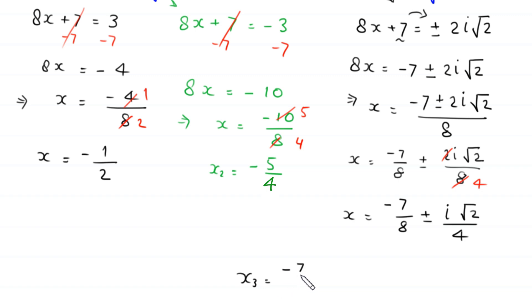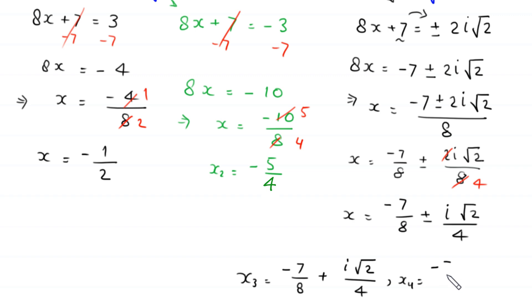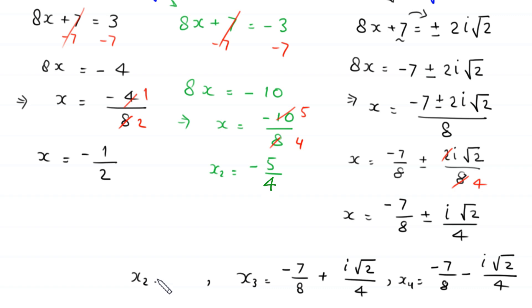So the four solutions are: x₁ = −1/2, x₂ = −5/2, x₃ = −7/8 + i√2/4, and x₄ = −7/8 − i√2/4. We have found all four solutions of this equation.